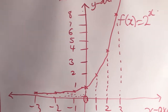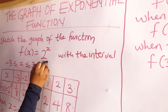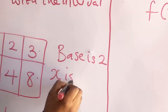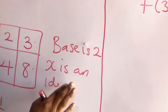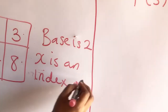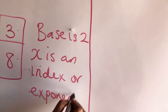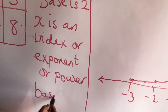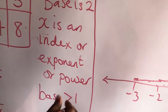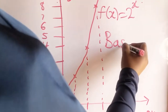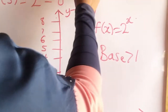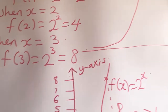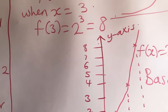What I want to explain here is that 2 is the base, while x is the index, or exponent, or power. When the base is greater than 1, you can see how the graph looks — it looks like this, and it doesn't touch the x-axis at all. Now let's see how the graph looks when the base is less than 1.